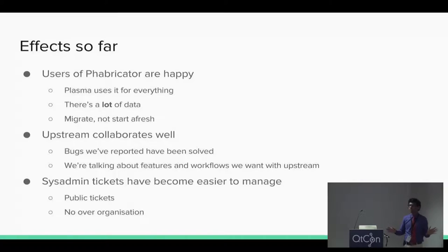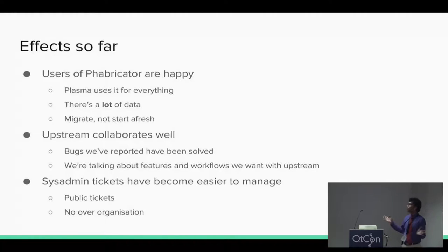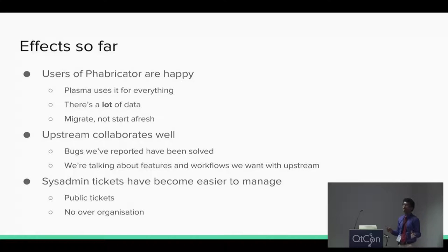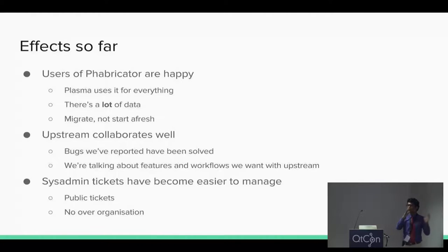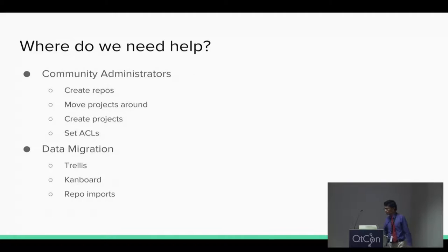Sysadmin tickets have become easier to manage. With Trellis, tickets could only be private — only seen by the person who filed it and the sysadmins. With Fabricator, we can make tickets public, so if someone files about a big infrastructure change, others can weigh in. Trellis was over-organized — we had 17 categories for 10 tickets a day. Now tickets are tasks on a workboard we can arrange by column and move by priority, which has reduced our overhead considerably.